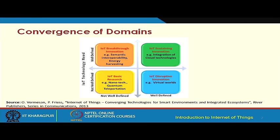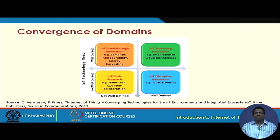In terms of basic research, there has been a lot of work on nanotechnology and quantum teleportation. Quantum teleportation basically means how information at the atomic level is sent from one point to another. Nanotechnology involves things like nano IoT nodes, nano sensor nodes, and nano networks — networks formed at the nano scale for different purposes, including inside the human body at the molecular level.